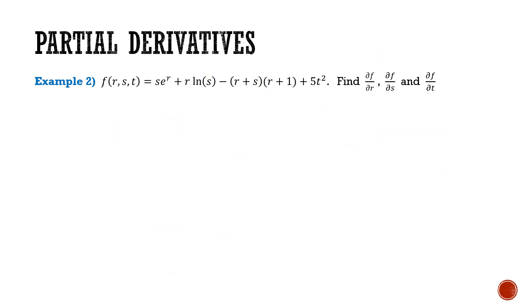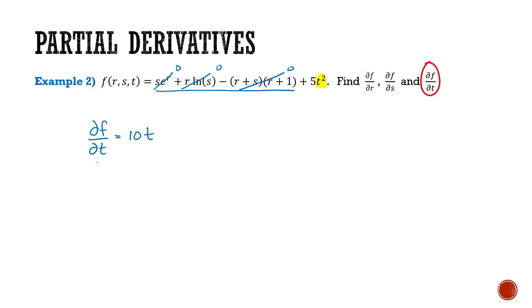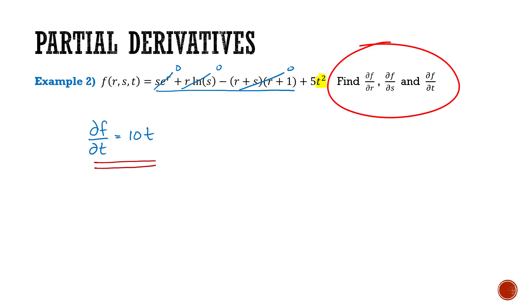Finally, we're going to do ∂f/∂t. The only term with a t variable is in the last term. Thus, each of the other terms are treated like constants, and the derivative of constants is 0, so each of those terms has a derivative of 0. I only have to do the derivative of the last term. ∂f/∂t is going to be 10t. Now I've completed all three partial derivatives: ∂f/∂r, ∂f/∂s, and ∂f/∂t.